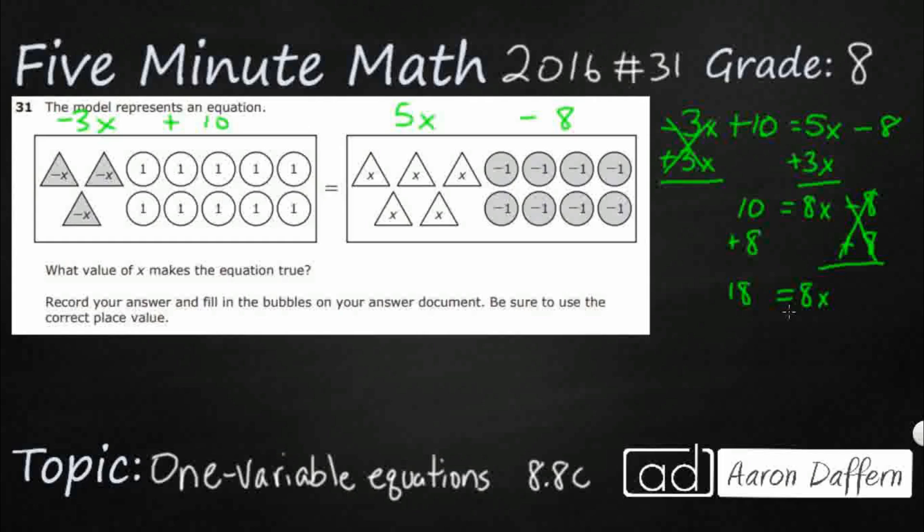So then I need to isolate by using the inverse operation. If it's 8 times x, let's divide by 8. So 18 over 8 is going to equal x. Let's see, that's going to equal 9 over 4. That's going to be a mixed number here, and so that's going to be 4 goes into 9 twice.